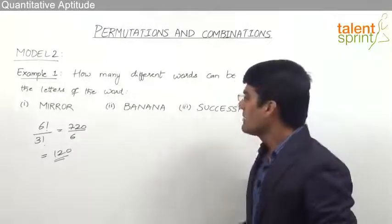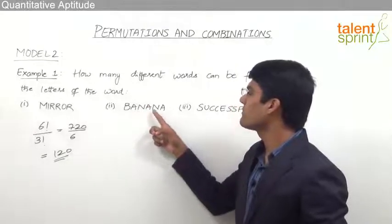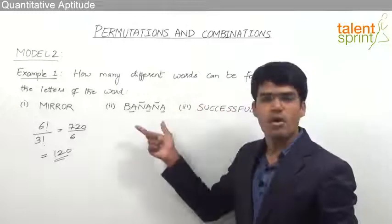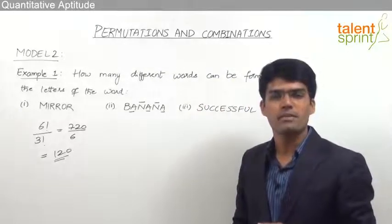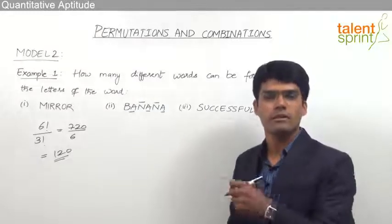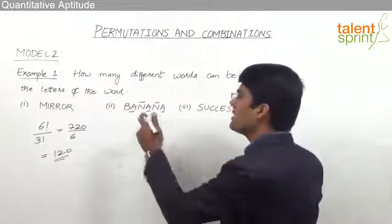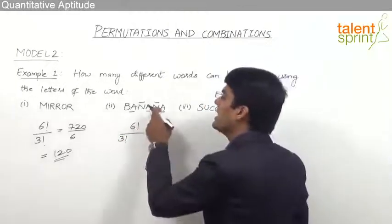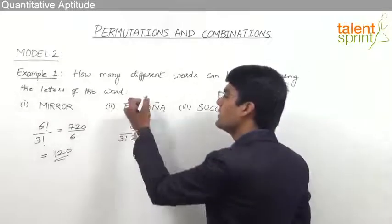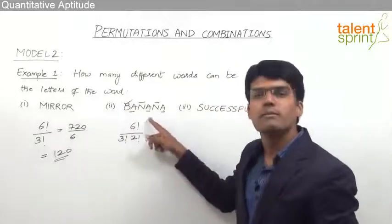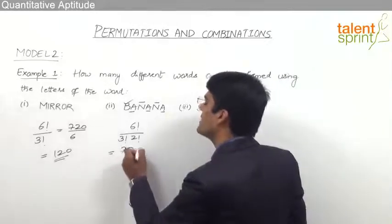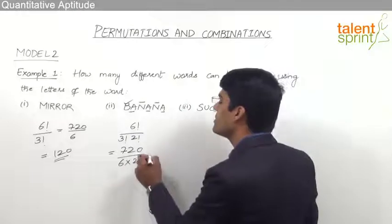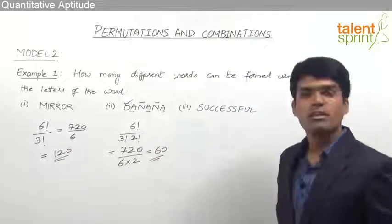The second word is banana, and we have got total six letters again. If you observe, the letter A appears thrice and the letter N appears twice. So how many different words can be formed using these six letters? Whenever there is a repetition, we go for n factorial by p factorial into q factorial and so on. Here there are only two categories of repetitions. So the answer is six factorial — for the six total letters — divided by three factorial because A appears thrice, and two factorial because N appears twice. The letter B is unique so we need not worry about it. That gives 720 divided by 6 into 2 = 12, so 720 by 12 equals 60. Therefore 60 different words can be formed using the letters of the word banana.